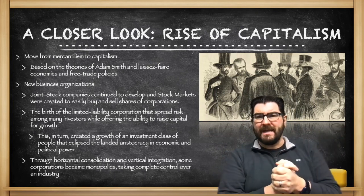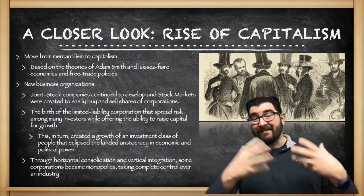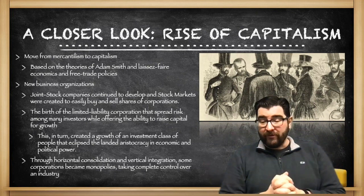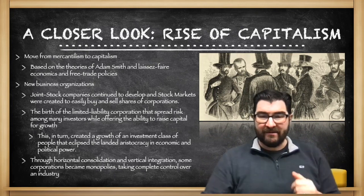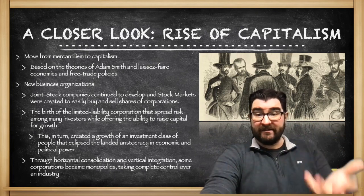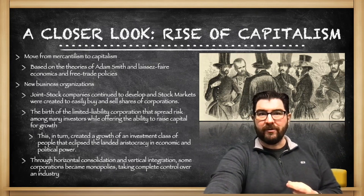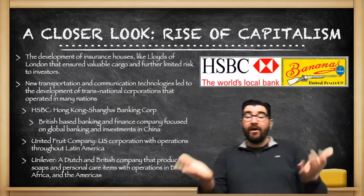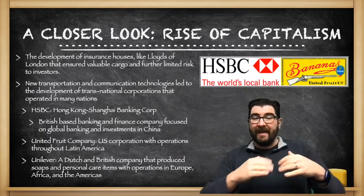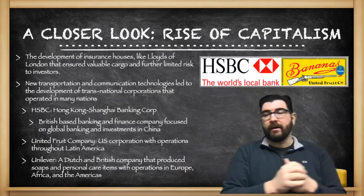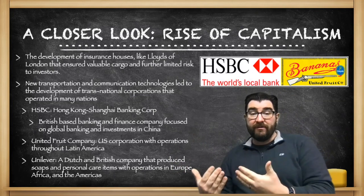This leads to the development of monopolies in the 19th century, where one company takes complete control over an industry or a market. This causes some to become incredibly wealthy while others end up paying far more for their products. We also see during this era the rise of insurance houses like Lloyd's of London, which insure valuable cargo going across long distances and even oceans, further limiting risk to investors. When there's less risk, more people are willing to invest more in these companies.